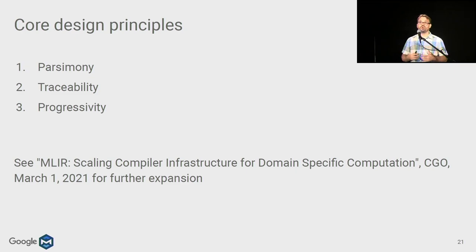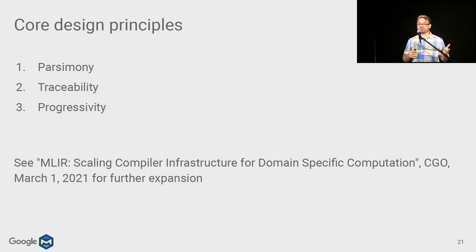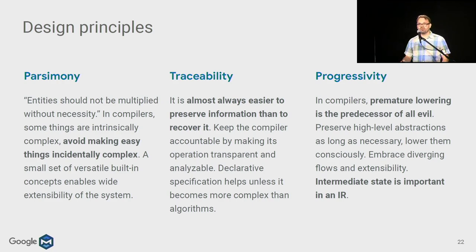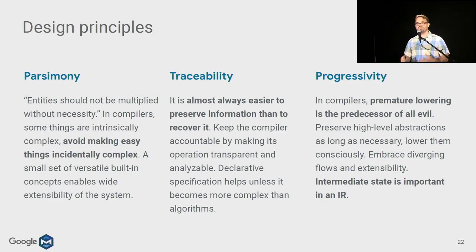MLIR has several core design principles, detailed in a CGO 2021 article. Three key ones are parsimony, traceability, and progressivity. Parsimony means avoiding introducing additional or redundant concepts unless they serve value — having a small set of versatile concepts that can be extended for different domains, rather than hard-coded ones. The goal is to avoid making easy things incidentally complex.